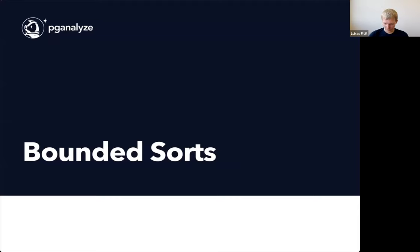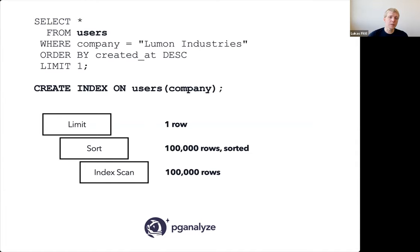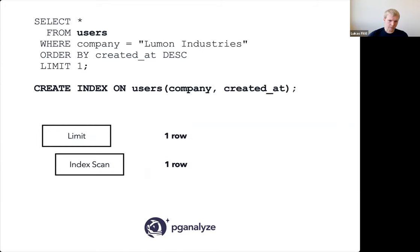Another special case is bounded sorts. Imagine we have hundreds of thousands of employees and we're trying to get the most recently joined user — selecting from users, filtering by company, ordering by created_at descending, with LIMIT 1. There are two ways Postgres can implement this depending on which index you have. If you have an index only on company, Postgres has to first find all matching rows — say 100,000 — then sort those rows in memory or on disk by created_at, then get the top row. That's going to take time.